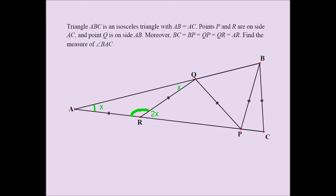This angle is 180 minus 2X, and the three angles of any triangle add up to 180 degrees. So if triangle QRP is also isosceles, that makes this angle 2X as well. With this 2X and this 2X, the remaining angle is going to be 180 minus 4X, because three angles of any triangle add up to 180 degrees.